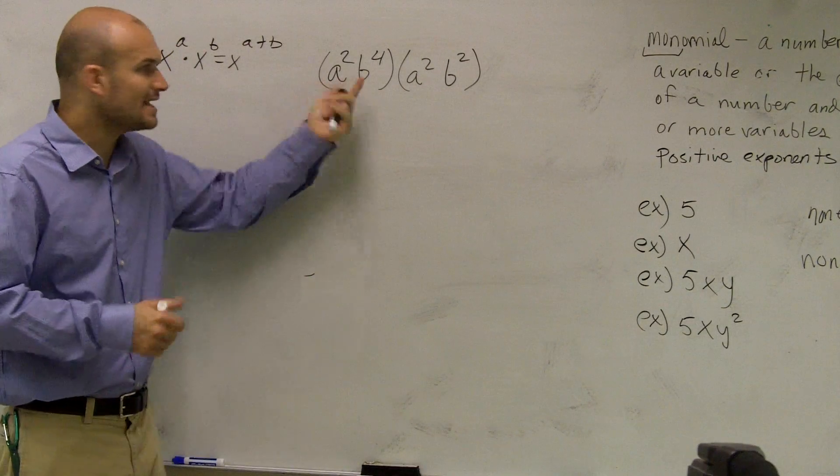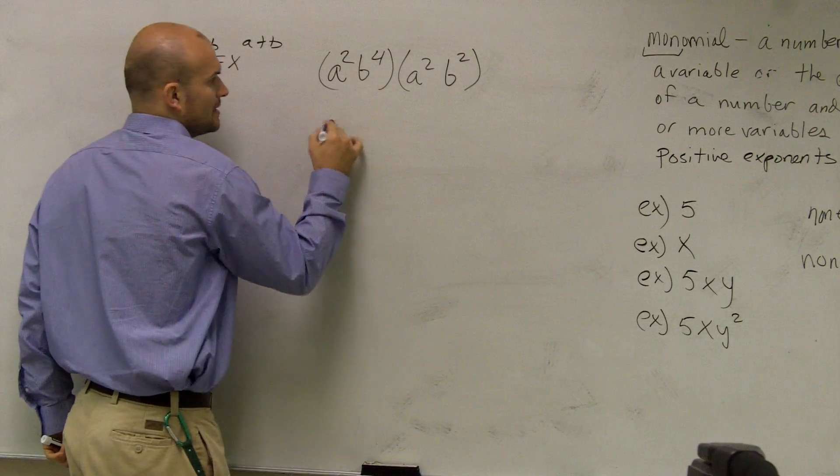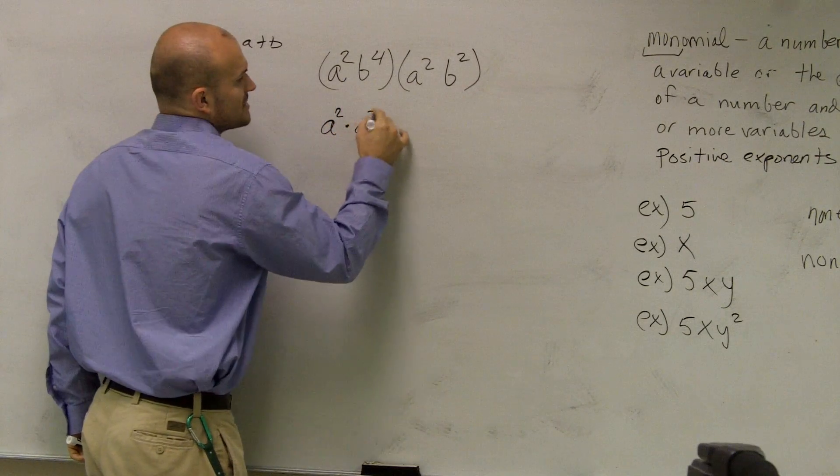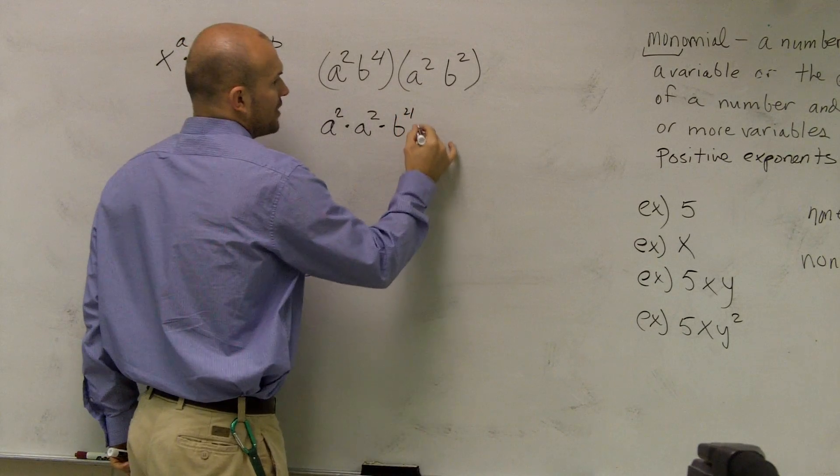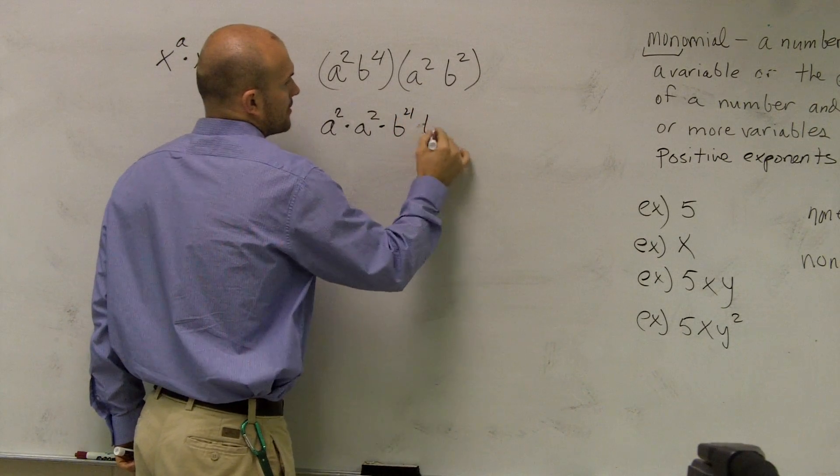So therefore, I can only multiply a squared times a squared, and I can only multiply the b to the fourth times b squared.